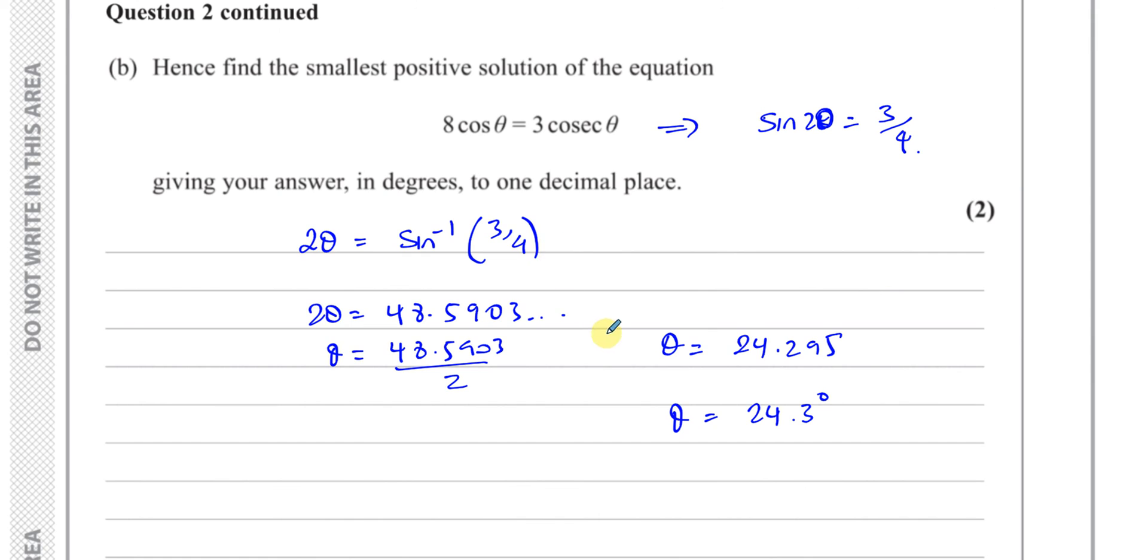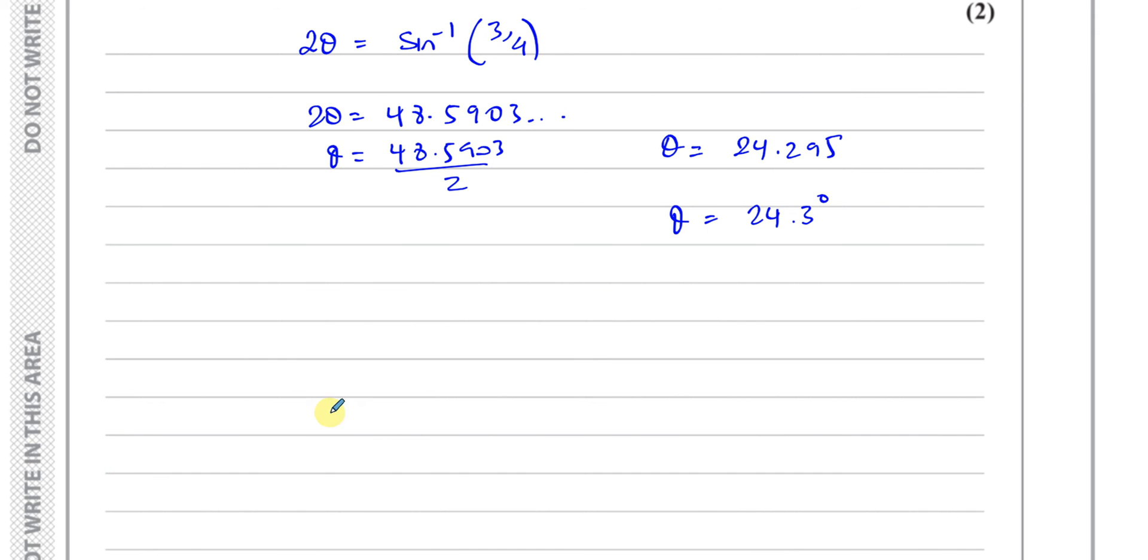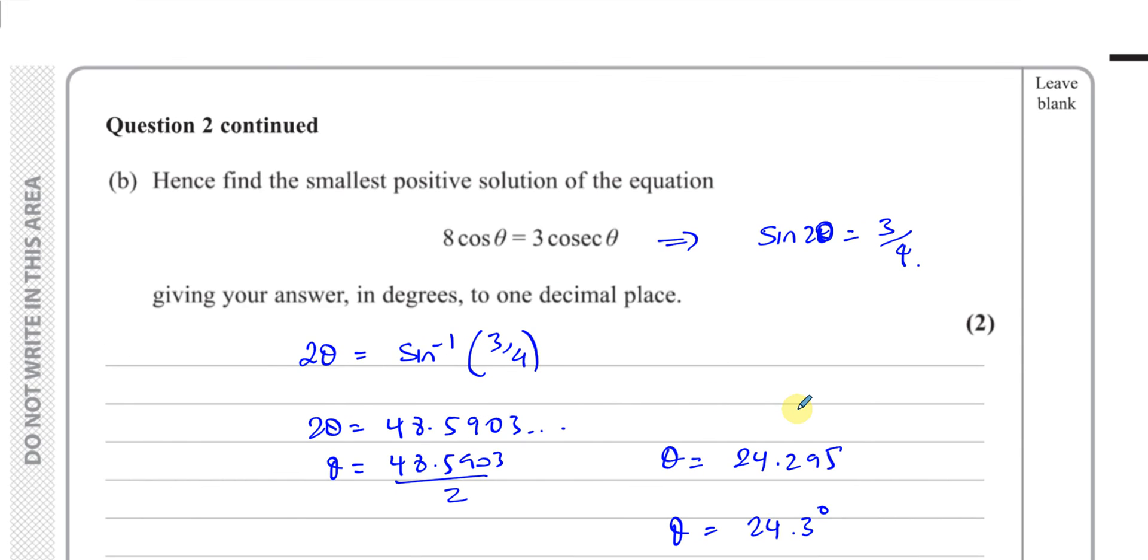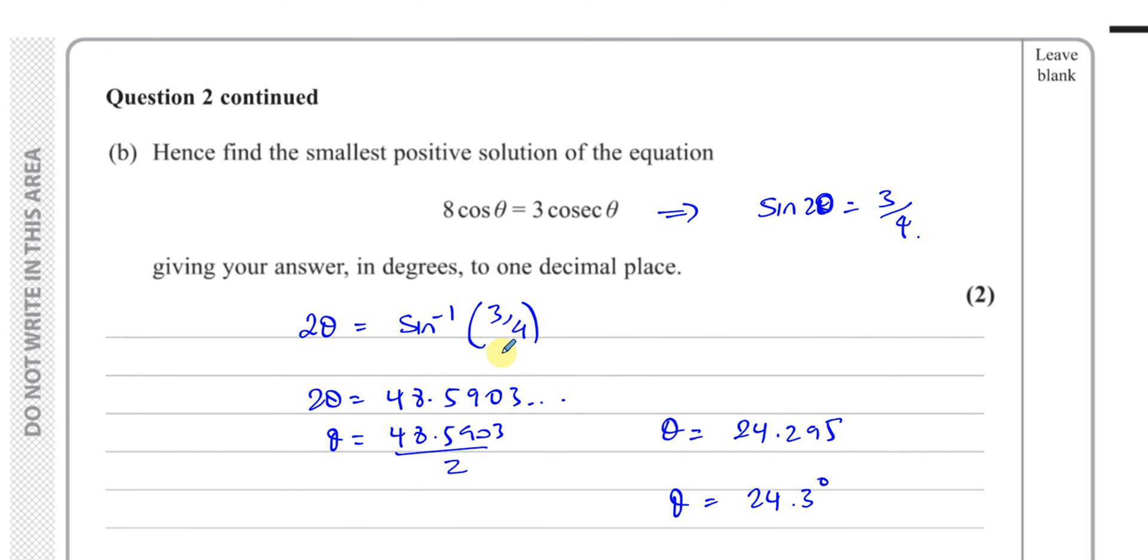That's the smallest positive solution of this equation. Okay, so there's the answer to that question, part B of 2. And I think that was all of question 2. And other questions from this particular paper, you can find in the playlist that will appear in this area here. And this is the paper, January 2022 P3 International A-Level. Other questions from this particular topic of trig identities and equations from P3 can be found in this playlist. And you can subscribe to my channel by clicking on this link. Thank you for watching and see you soon.